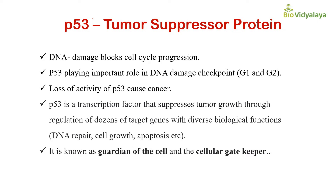Let's see about P53 protein. P53 protein is also known as TP53. Its molecular weight is 53 kilodaltons, and that's why this protein is known as P53 protein. This P53 protein is a tumor suppressive protein, like our RB protein. That means this P53 protein is playing an important role in the prevention of tumor formation, and loss of function of this protein leads to the formation of cancer or tumor.